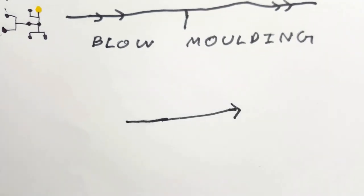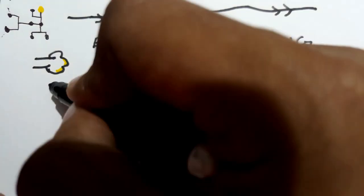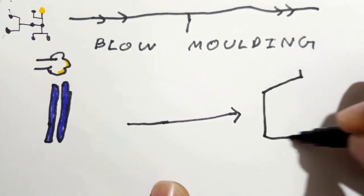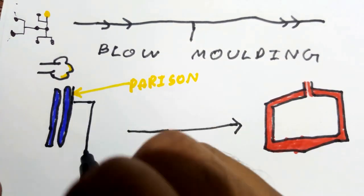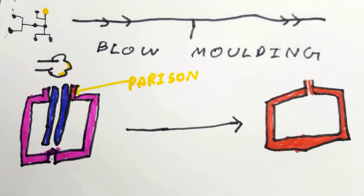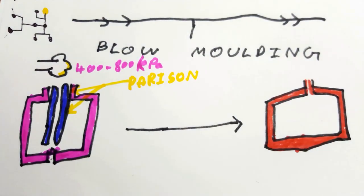Second in line is Blow moulding, which is a process in which air pressure is used to inflate soft plastic into a mould cavity. The soft plastic is usually called a parison, which is gripped between a two-piece mould. The air pressure is about 400 to 800 kPa.